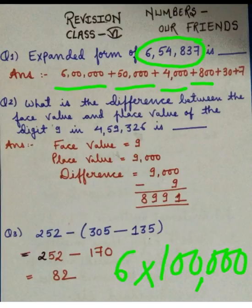Next is 3. We will multiply 3 by 10 because its place value is tens, so we will get 30. And ultimately the place value of 7 is ones, so we will multiply it by 1 and we will get 7. This is how we have expressed the given number as the sum of the place values of all the digits in it. I hope you have revised this topic.